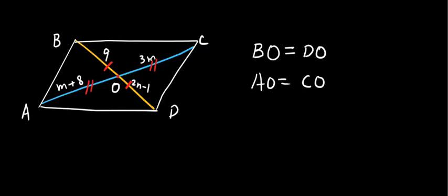Therefore, we can set up BO equals DO, we set up as 2N minus 1 equals 9. Or you can say 9 equals 2N minus 1. Either is fine.